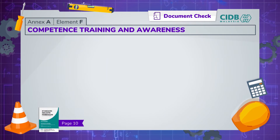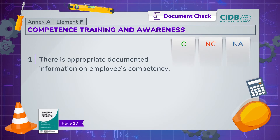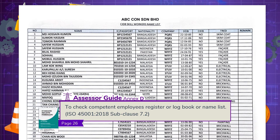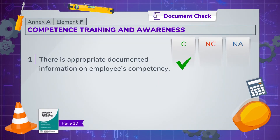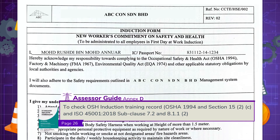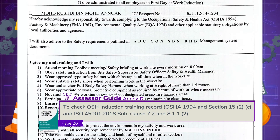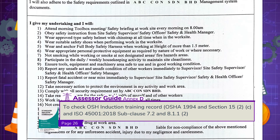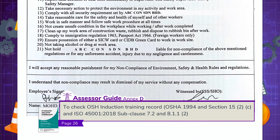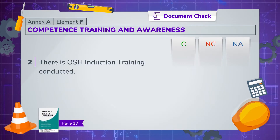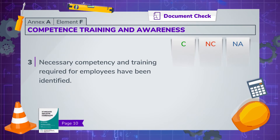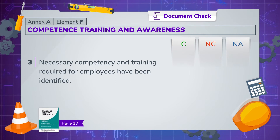In element F, we assess the safety and health competence, training and awareness provided to employees. First, check the competent employees register, logbook or namelist. Verify that OSHA induction training has been conducted by examining the training records and their OSHA induction training programme. Ask to view OSHA training need analysis documents to ensure that the necessary competency and training required for employees have been identified.